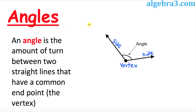Hello again everyone. In this video tutorial we will be talking about different kinds of angles. The very first thing we're going to do is define an angle. An angle is simply the amount of turn between two straight lines. These lines are also called sides that have a common endpoint, and this endpoint is called a vertex.